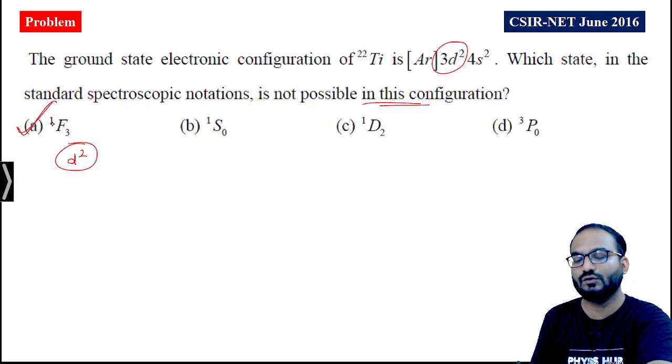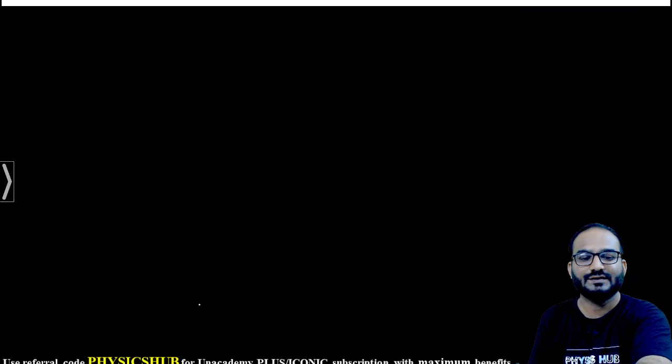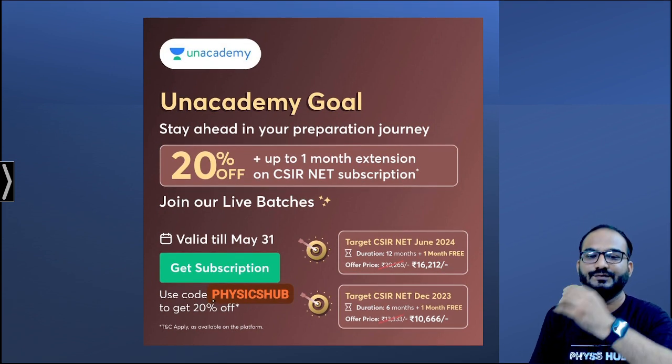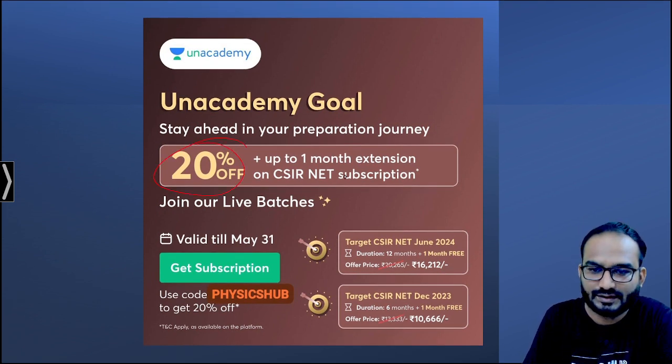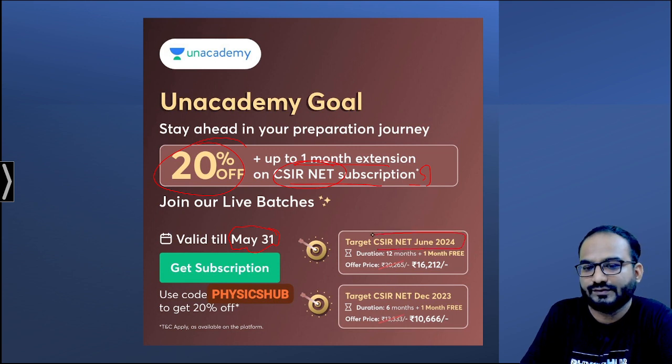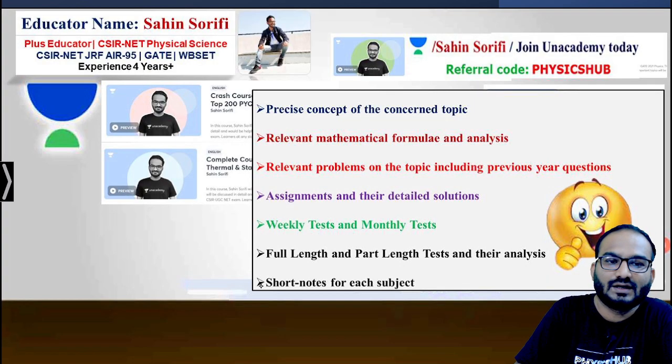In the next video we'll be talking about non-equivalent electrons. Before I end this video, let me tell you that the Unacademy Goal is going on: stay ahead in your preparation journey with 20% off plus 1 month extension on CSIR-NET subscription, valid till May 31st. You can go for CSIR-NET June 2024 or December 2023. Utilize our referral code PhysicsHub for getting maximum benefits.